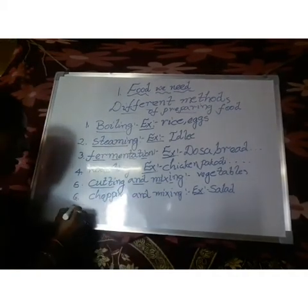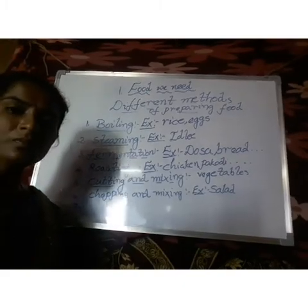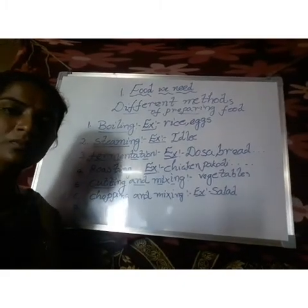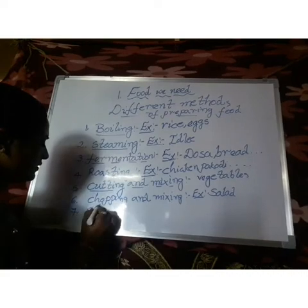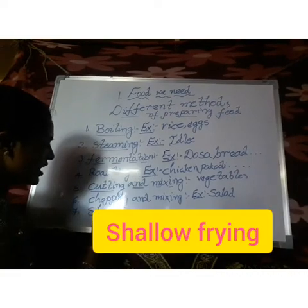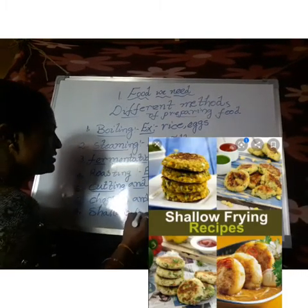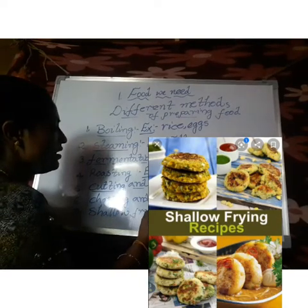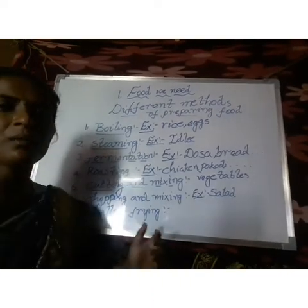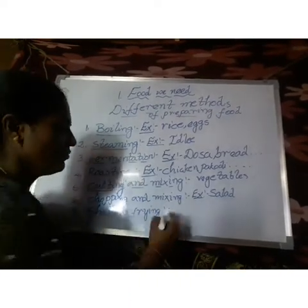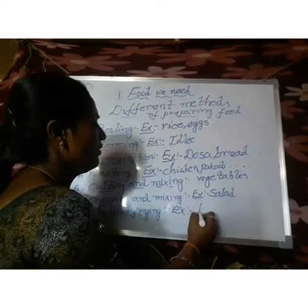The seventh method is shallow frying. Shallow frying means you fry just a little bit. An example for shallow frying is fish. These are the different methods of preparing food.